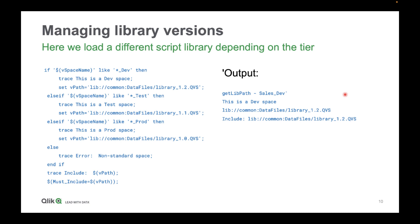Another thing we can do using this logic is handle scripts — say a library of different script functions we like to bring into our apps. We may have a different version defined for dev, test and prod. So here, if it's any of the dev spaces, we pull in version 1.2; test is using version 1.1, and prod is using version 1.0. Over time we would change that, so as we release new versions of our scripts, apps will automatically pick up the right version based on where they are.